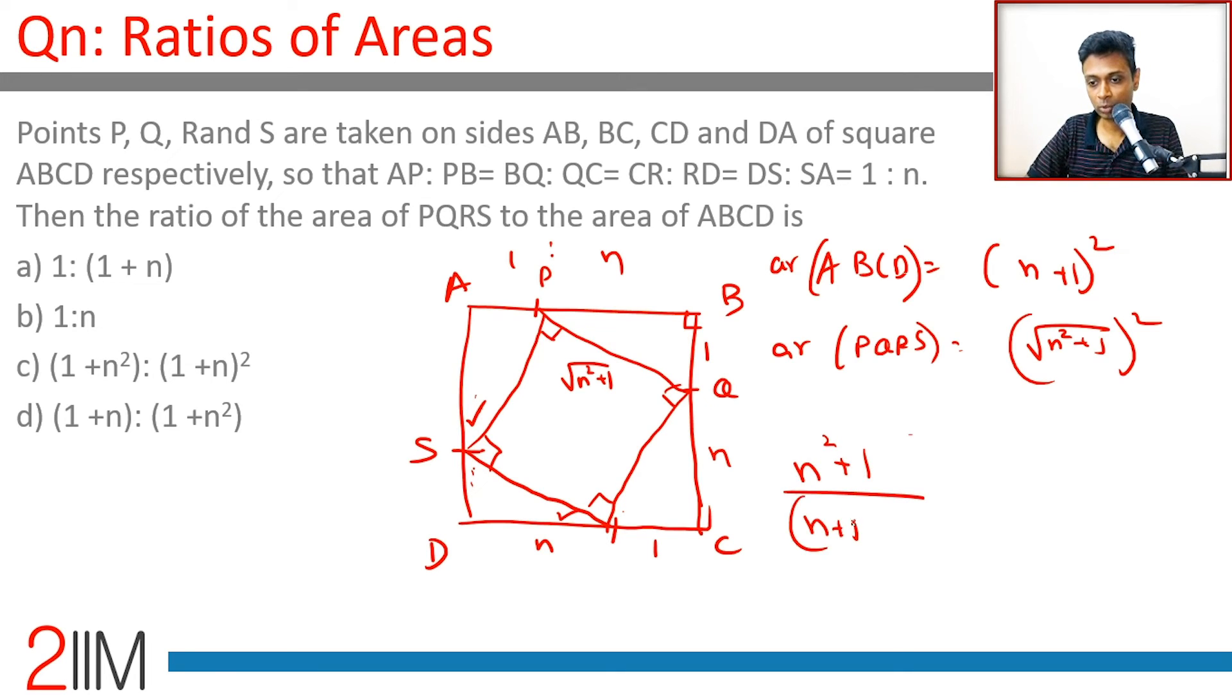By n plus one whole square. One plus n square by one plus n the whole square. This is the answer.